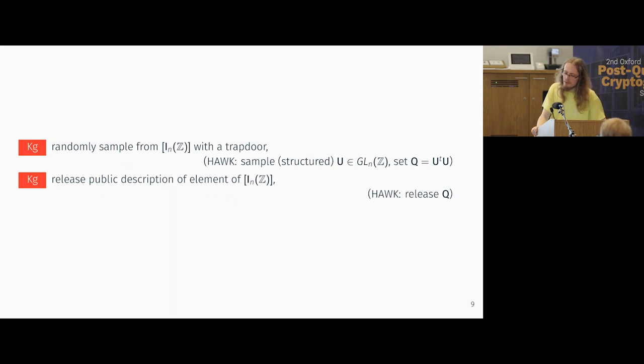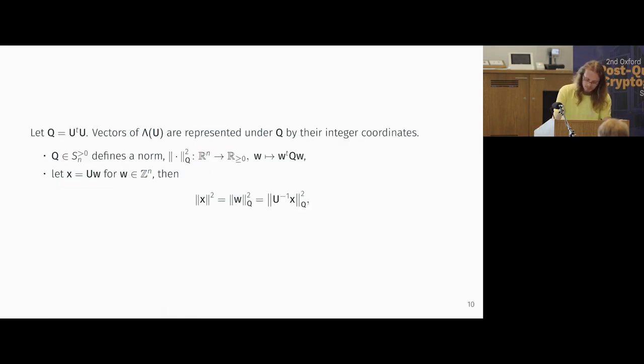So we're beginning to rebuild a signature scheme in LIP. We had randomly sampled a lattice with a trapdoor before, and now we have randomly sampled an element from this class. And the trapdoor is the unimodular matrix. And then when you want to release some public information, you release the gram matrix Q.